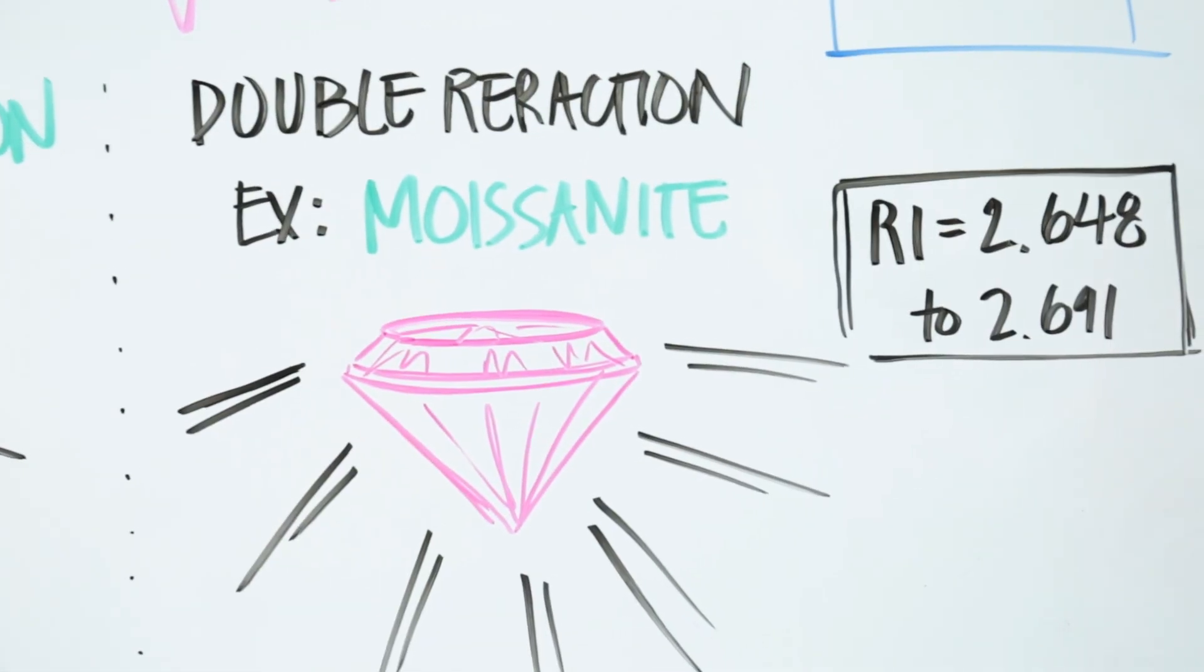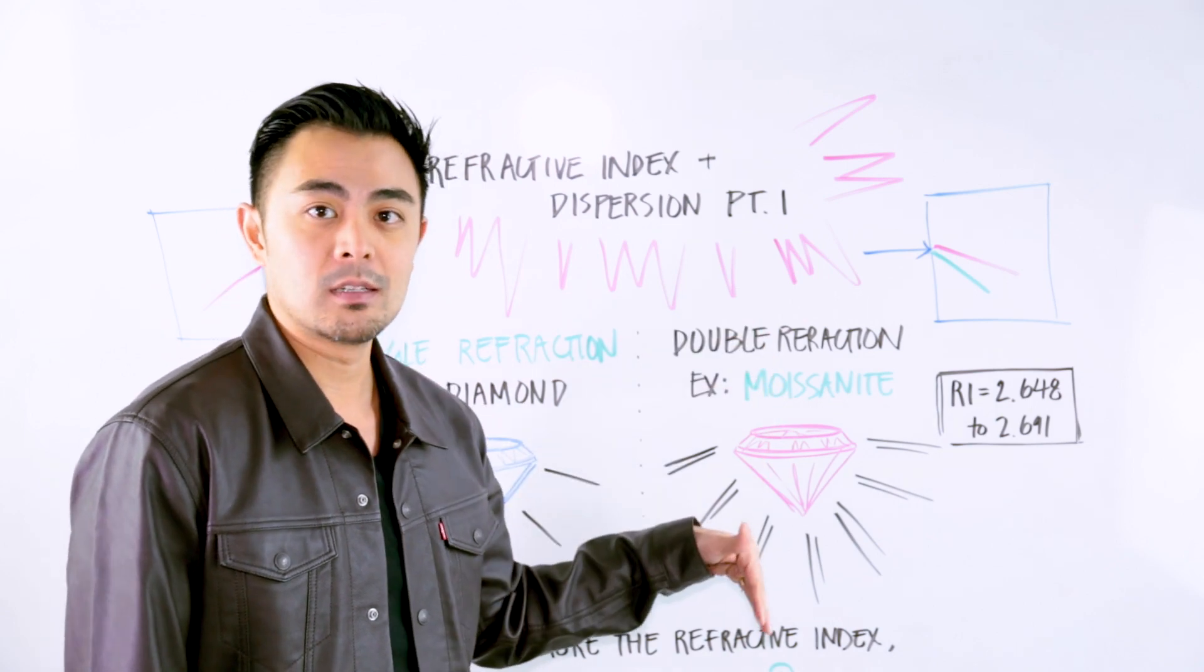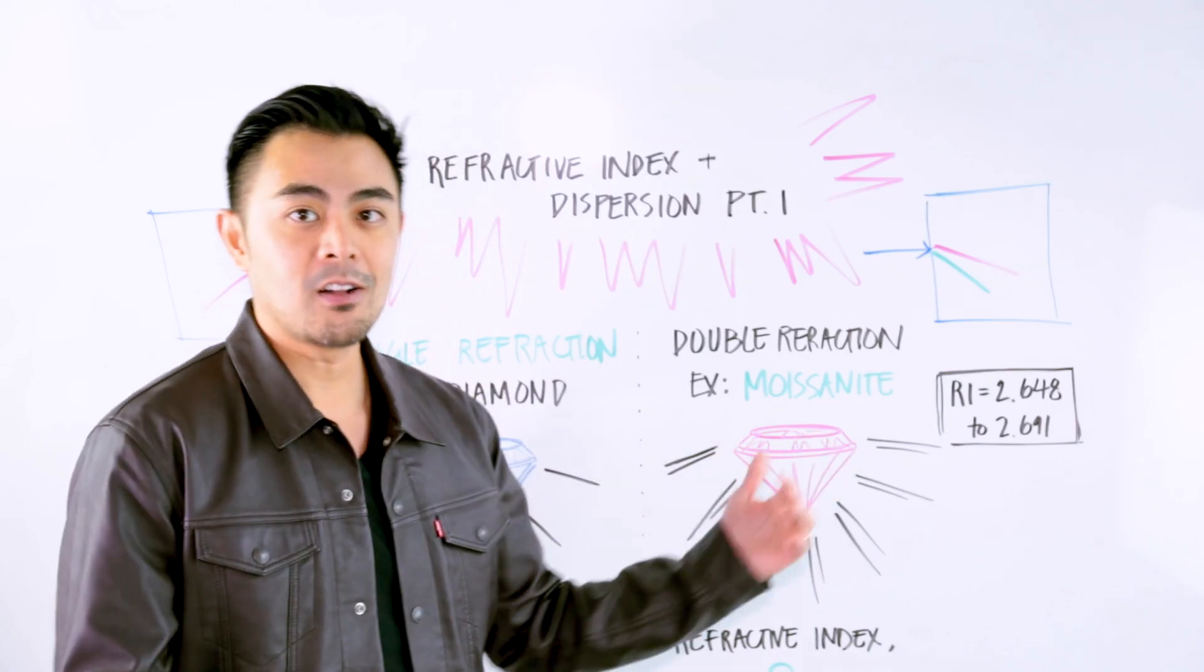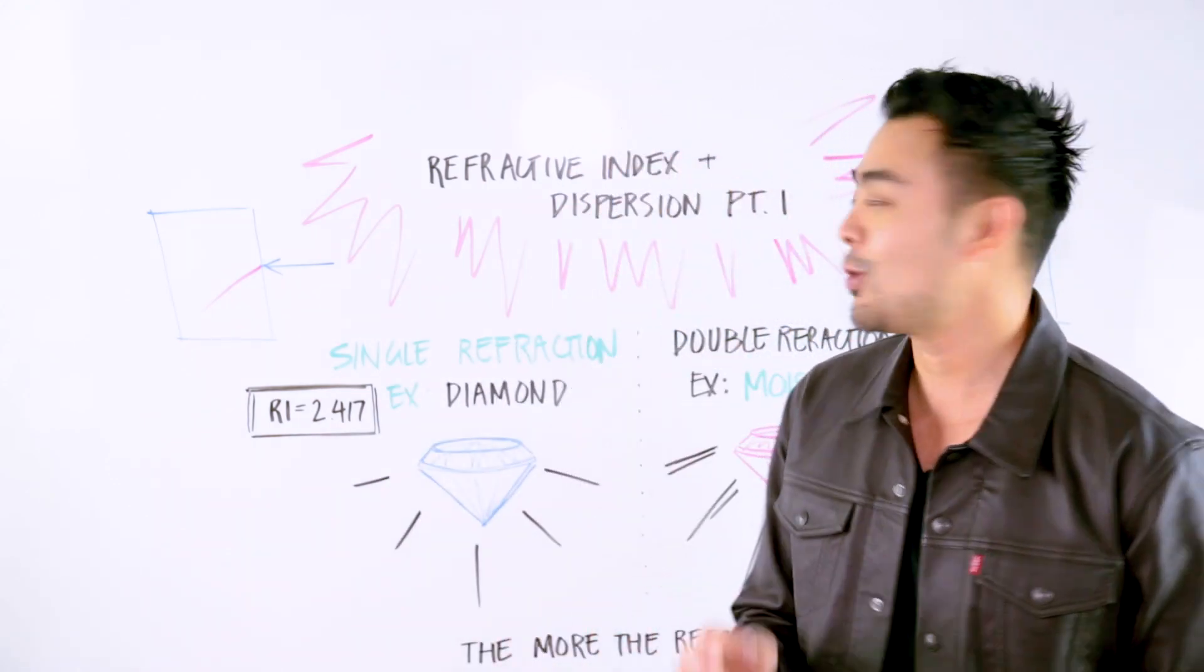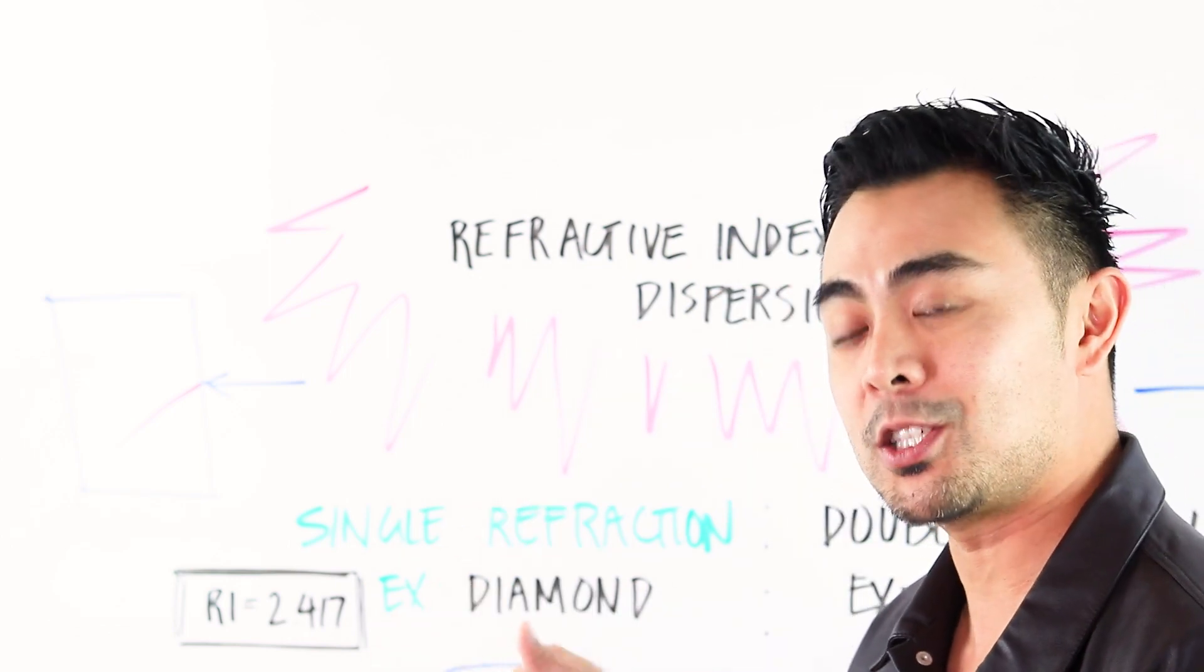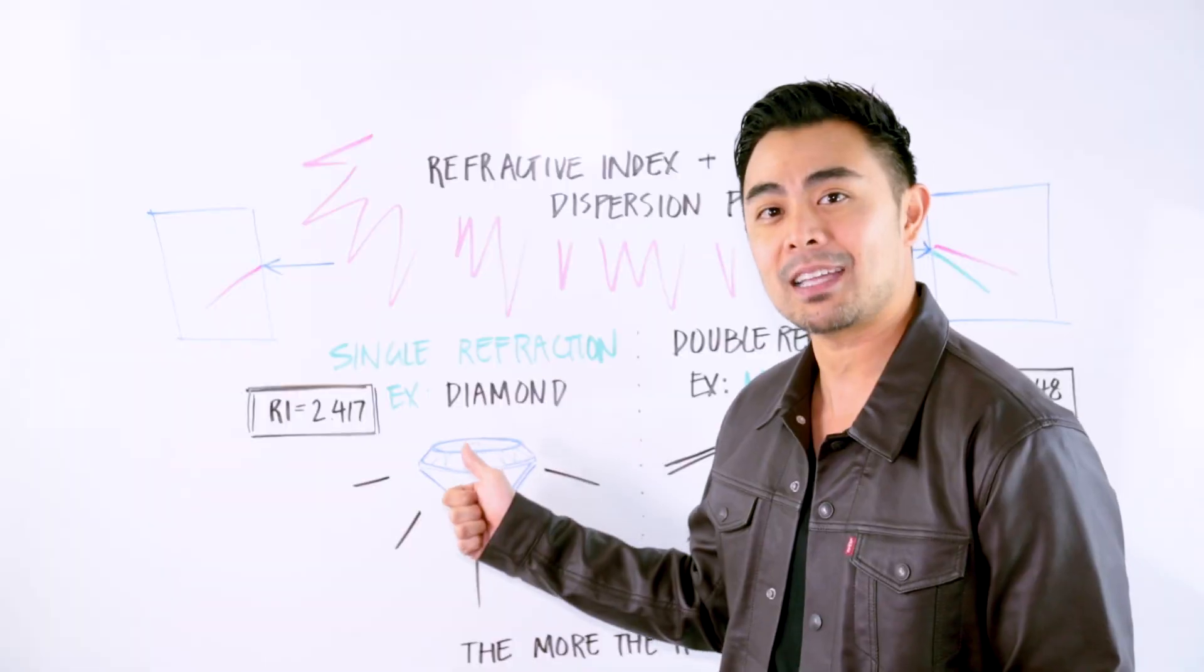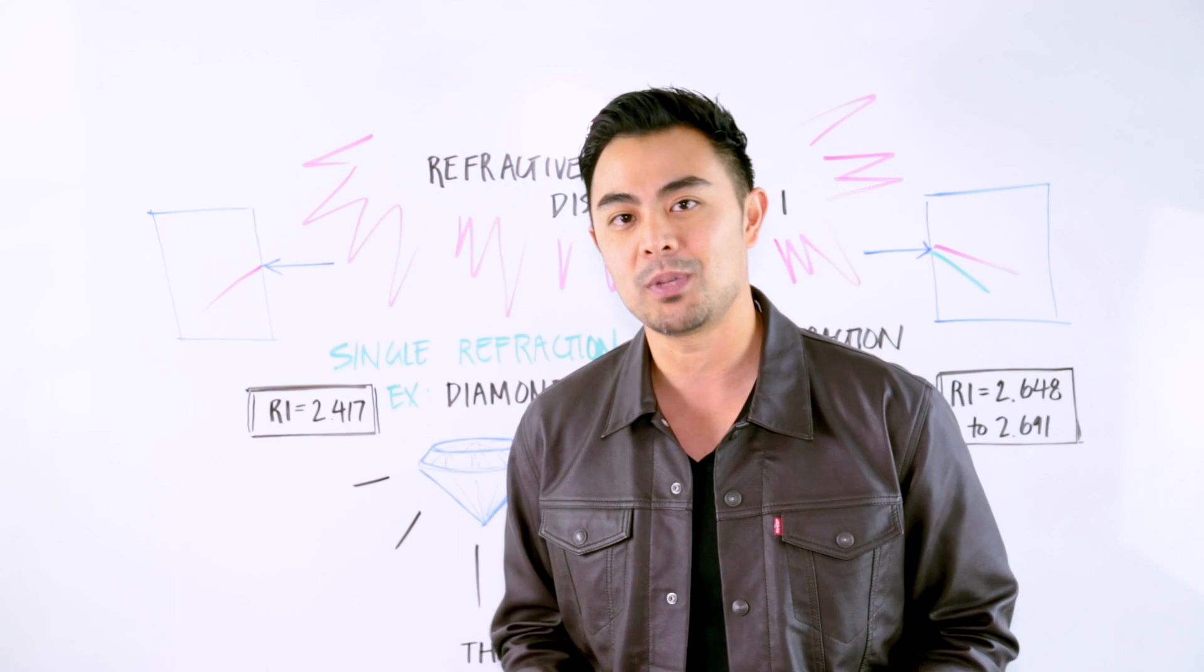Now, when it comes to moissanite, the refractive index is even higher, so that means it bends the light even more. So as it bends more, and it's doubly refractive, it gives it more of a sparkle. So that's all it basically means, and that's a breakdown of brilliance. In other words, in short, if there is a higher refractive index, it bends the light much more, and depending on how the gemstones are cut, if it's cut proportionally in a specific way, it will reflect light back into the crown of the gemstones, back into your eyes, and that's typically what people are going for.